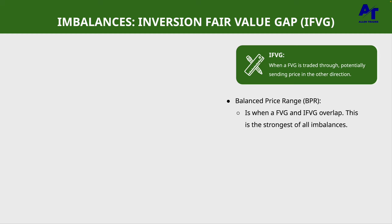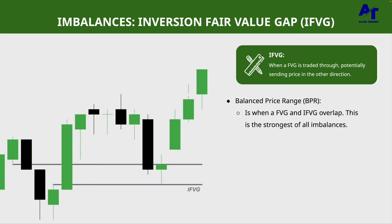Balanced price ranges are the most sensitive types of imbalances — you'll see the strongest reactions there. They are one of the biggest keys to how price moves. Here's an example: we have a fair value gap, price trades through it, and then we come back into it as an inversion fair value gap. But notice how when price traded through it, it created its own fair value gap. That is why we call it a balanced price range. When we hit it, price just goes directly up.